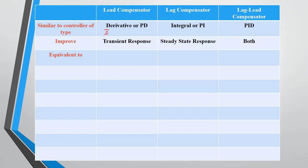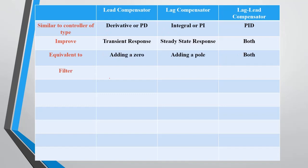The Laplace transform of any derivative is given by s multiplied by the Laplace transform of that function, and for integral we use one over s. So we can say that lead compensator is equivalent to adding a zero, and lag compensator is equivalent to adding a pole.